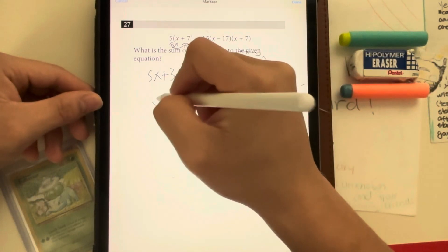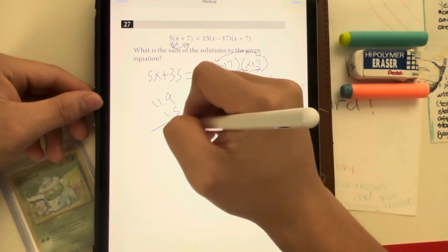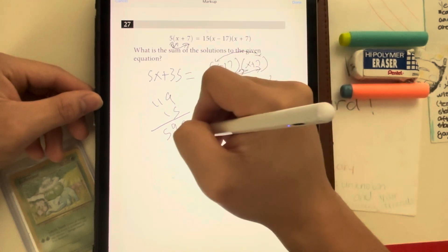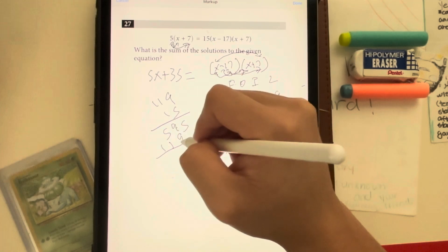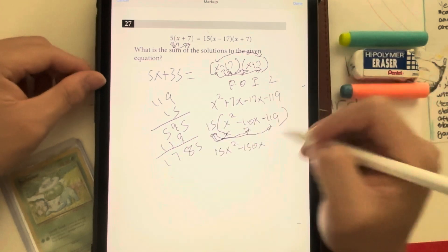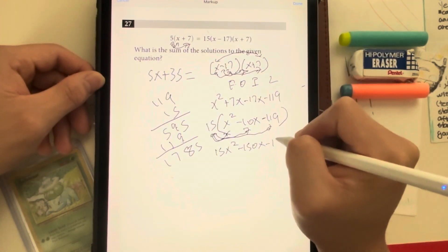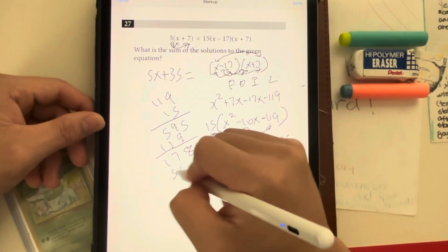119 times 15, that's a 45, that's a 9, and that's a 5. I get 9, 1, 1, which gives me 5. 9 plus 9 gives me 18, carry the 1, 7, and 1. So I get minus 1785. And this is all equal to the side, which is 5x plus 35.